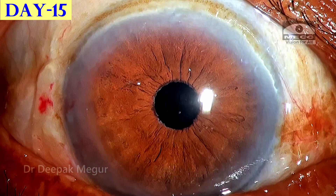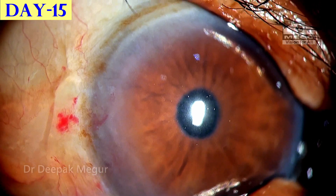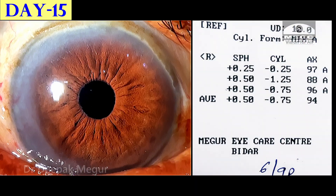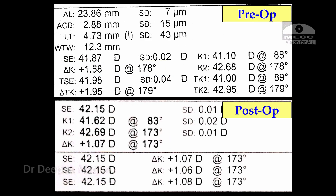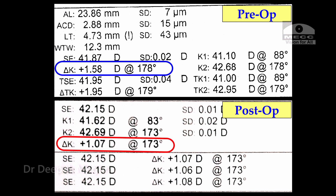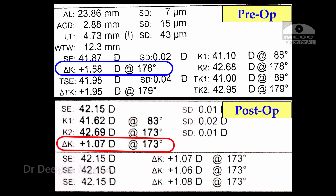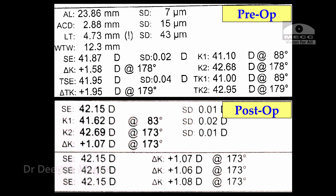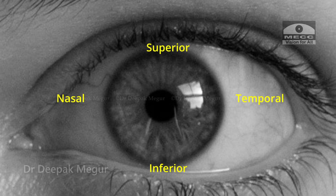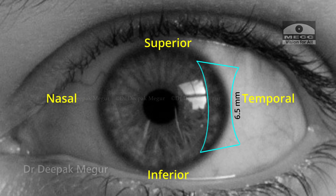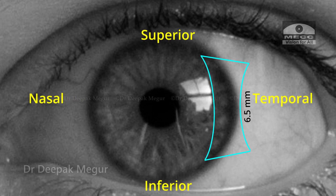On the 15th day of surgery, the wound is pretty much healed. The patient is happy with his vision. But when we measure the keratometry, the residual against-the-rule astigmatism is still about 1 diopter. This implies that the amount of surgically induced astigmatism by a 6.5 mm temporal sclerocorneal incision is just about 0.5 diopters.